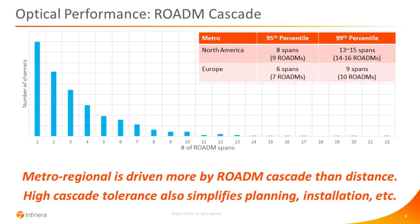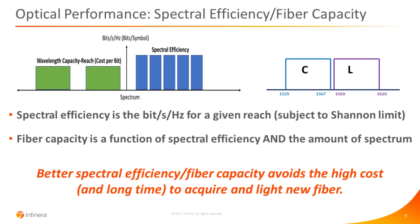Going through ROADMs can reduce the reach of the wavelength more than the distance alone. For metro regional networks, that can be more important. What we typically see in a North American network is, for the 95th percentile, about eight spans and very occasionally up to maybe 13 to 15 spans. In Europe, metros tend to be a little bit smaller — maybe the 95th percentile is six spans and the 99th percentile is nine spans. When we have good ROADM cascade tolerance, that really simplifies metro planning and installation.